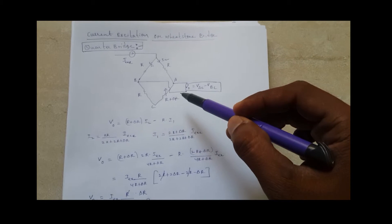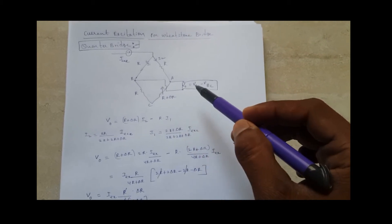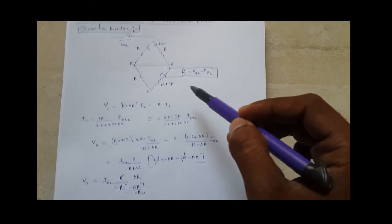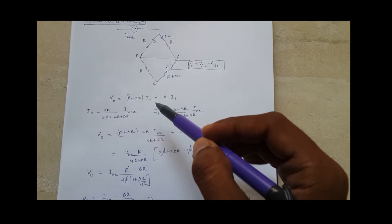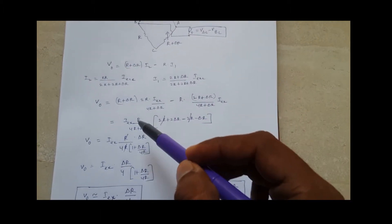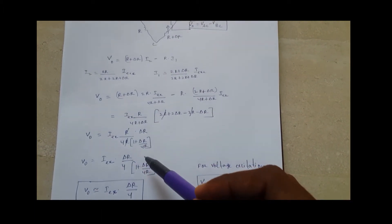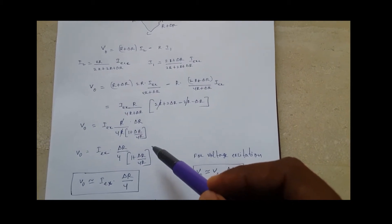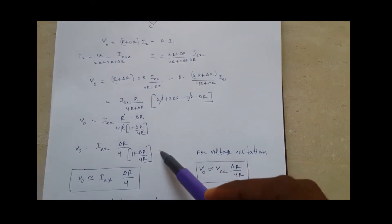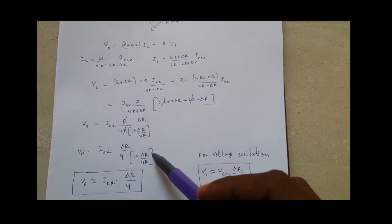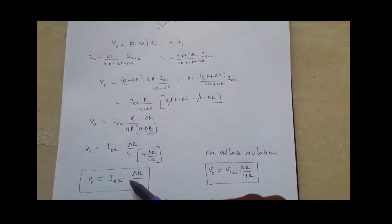The output equals V_AC minus V_BC. And if you derive the equation, we are getting V_output equal to I_excitation times delta R by 4 times 1 plus delta R by 4R. And if you neglect this denominator 1 plus delta R by 4R, we are getting V_output is equal to I_excitation times delta R by 4.